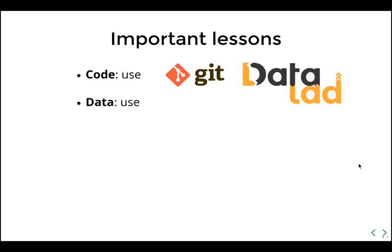For data: use BIDS everywhere, for any dataset. I cannot stress this enough. Sometimes you can't do full BIDS — at minimum use the BIDS naming scheme and directory structure for how data is stored. If you don't, any further analysis, re-analysis, or use of another tool will require re-coding, which always takes a lot of time. I can't remember any time where not using BIDS saved me time. BIDS is now available not just for MRI but also for MEG, EEG, physiological data, and much more.